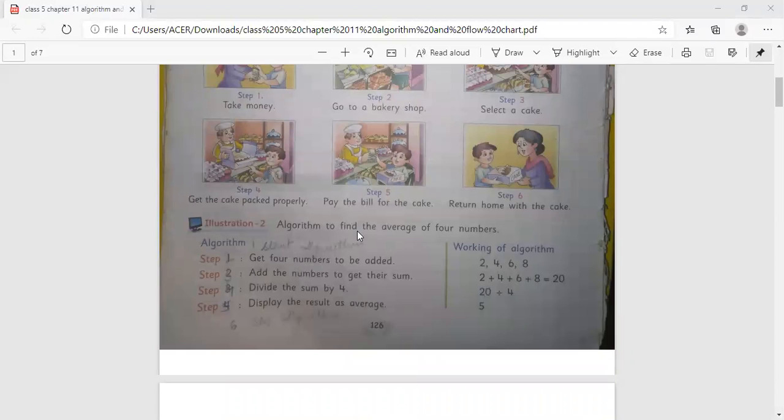Algorithm to find the average of 4 numbers. Step 1, get 4 numbers to be added. Step 2, add the numbers to get their sum. Step 3, divide the sum by 4. Step 4, display the result as average. Example: 2, 4, 6, 8. 2 plus 4 plus 6 plus 8 equals 20. 20 divided by 4 equals 5. So our answer is 5.